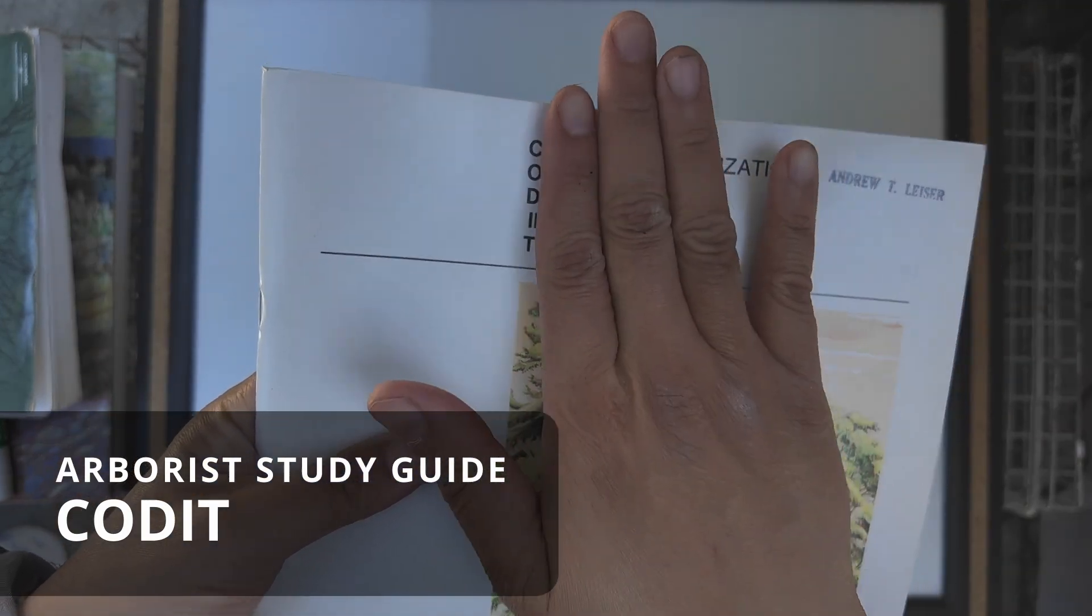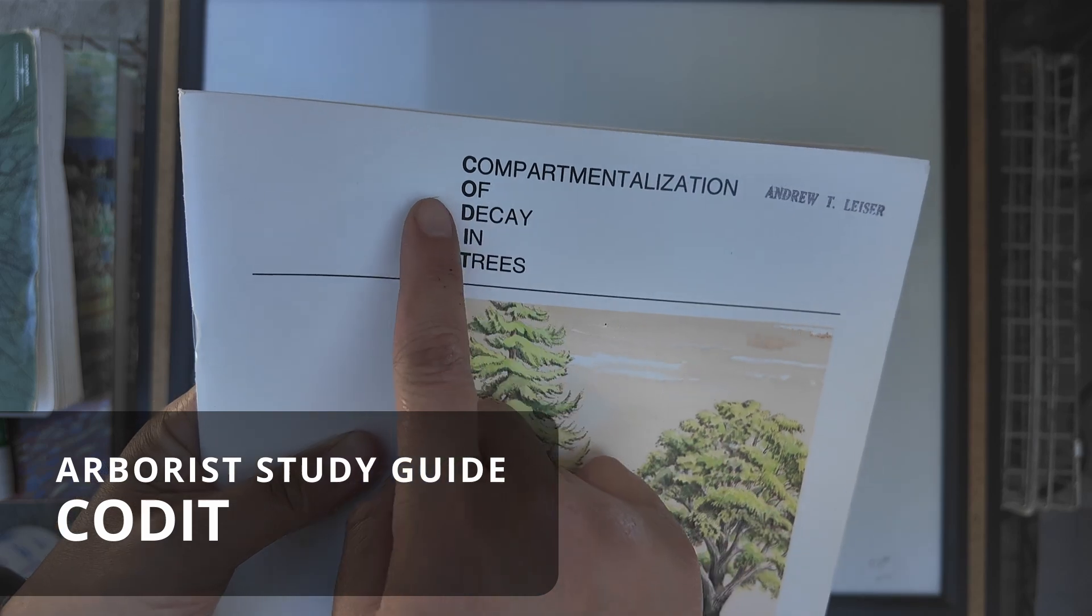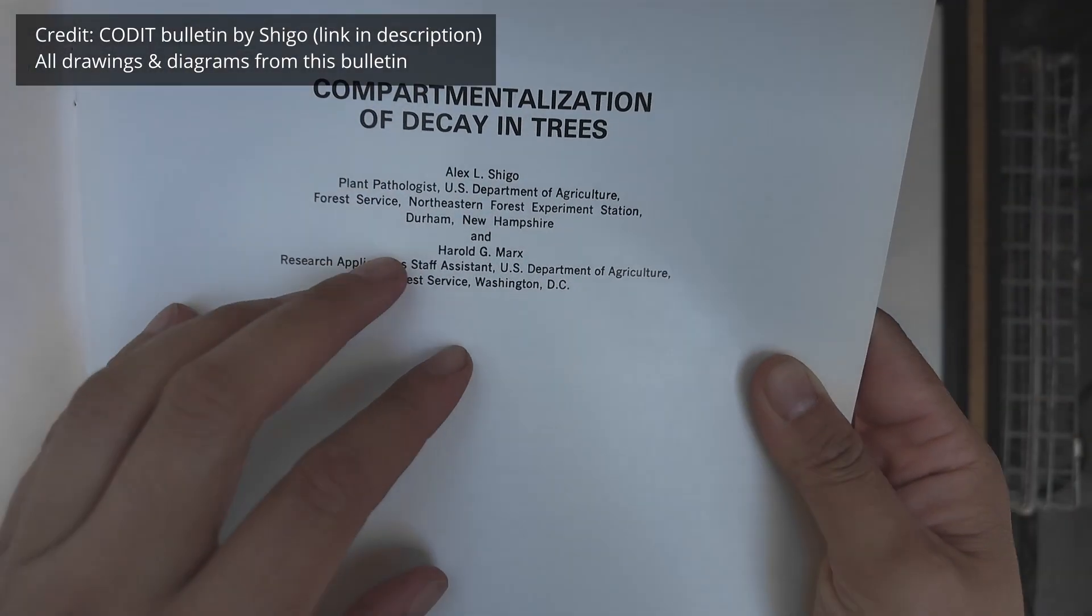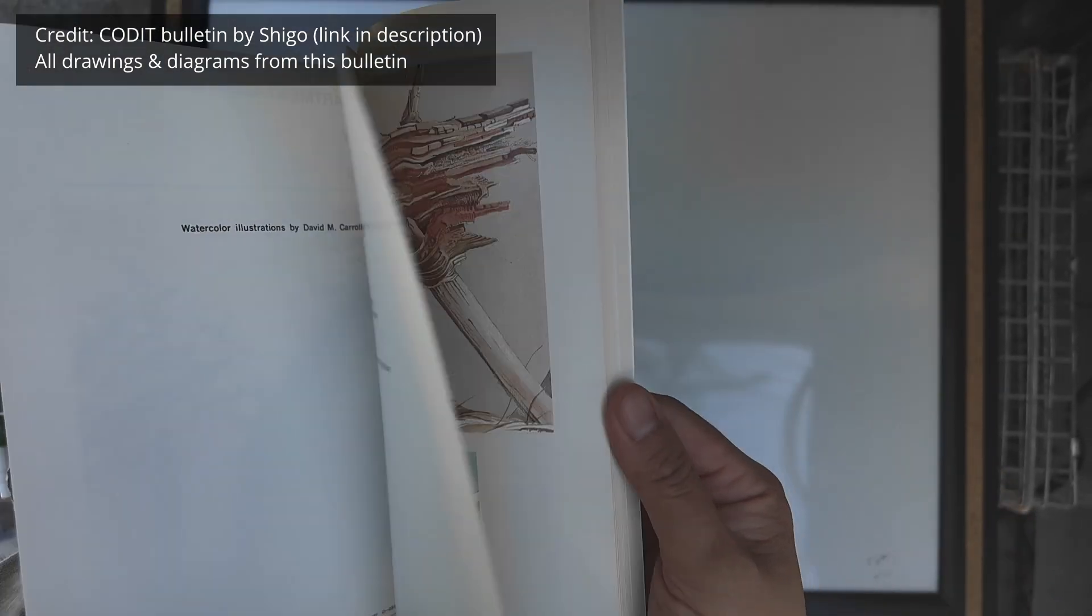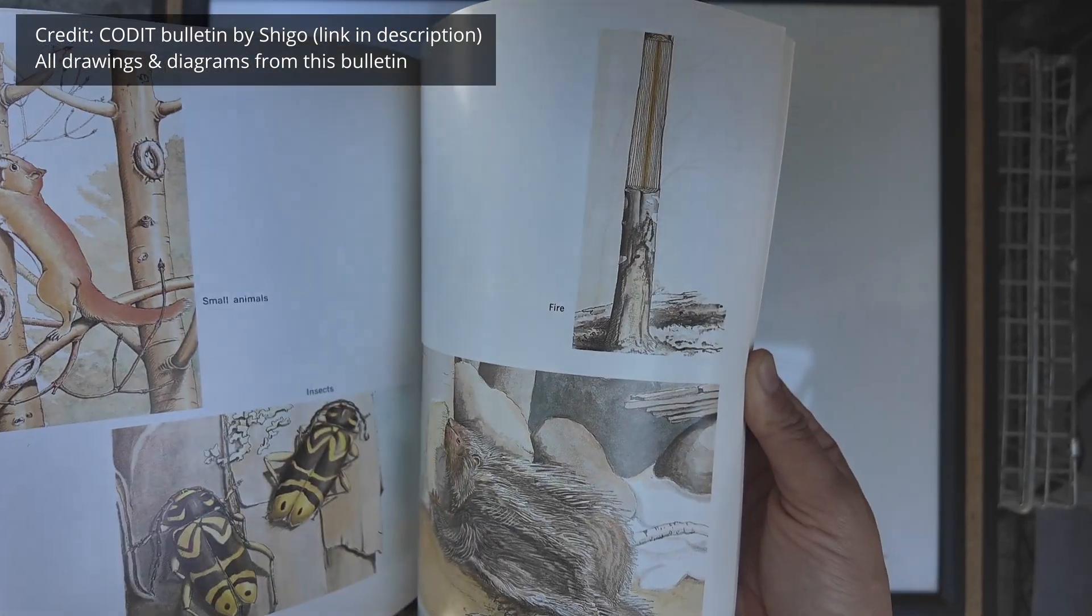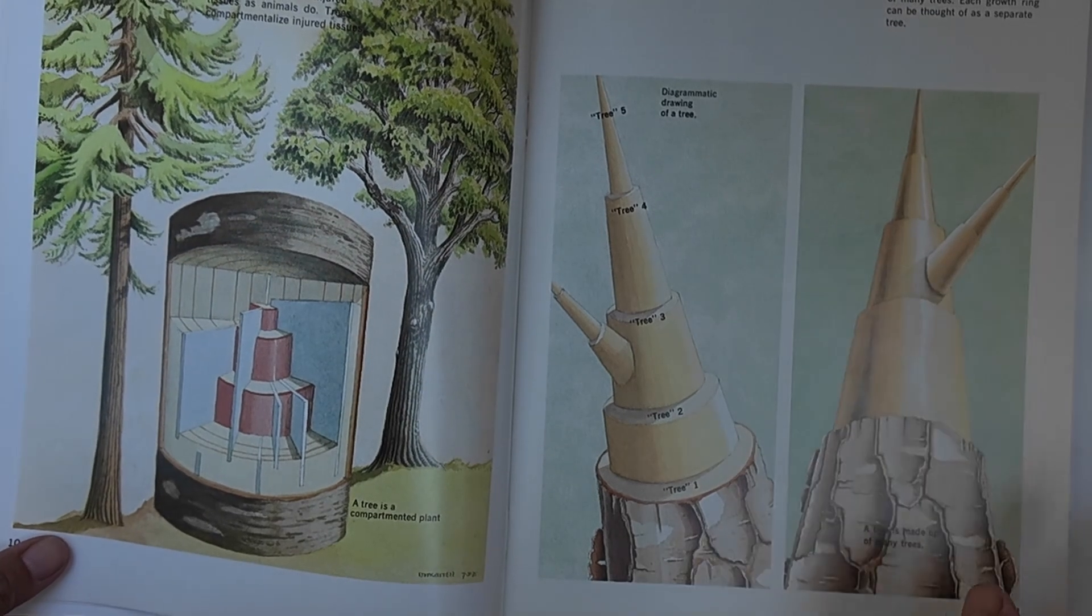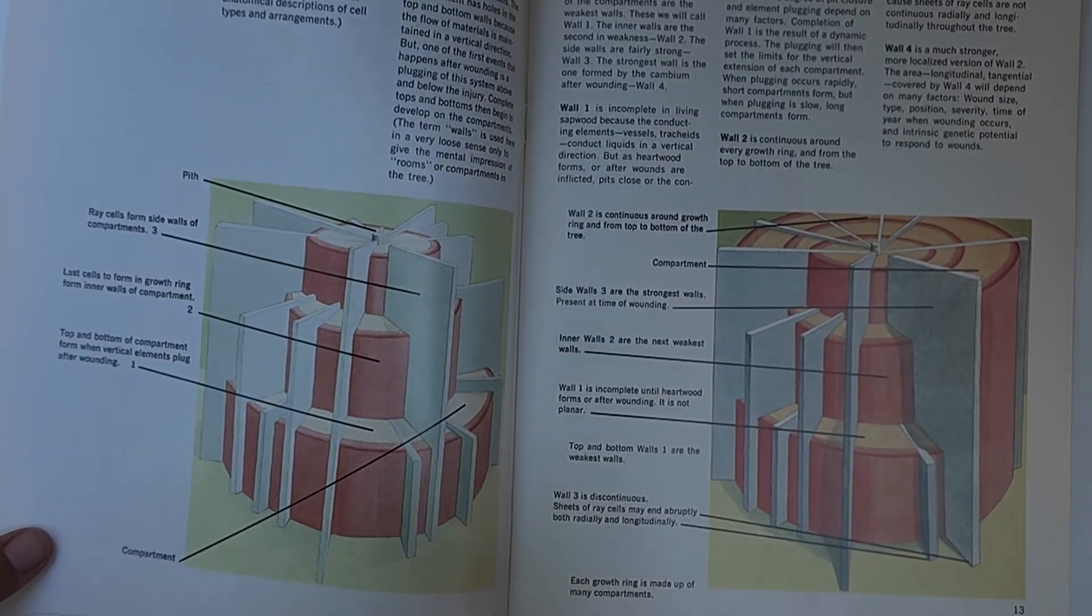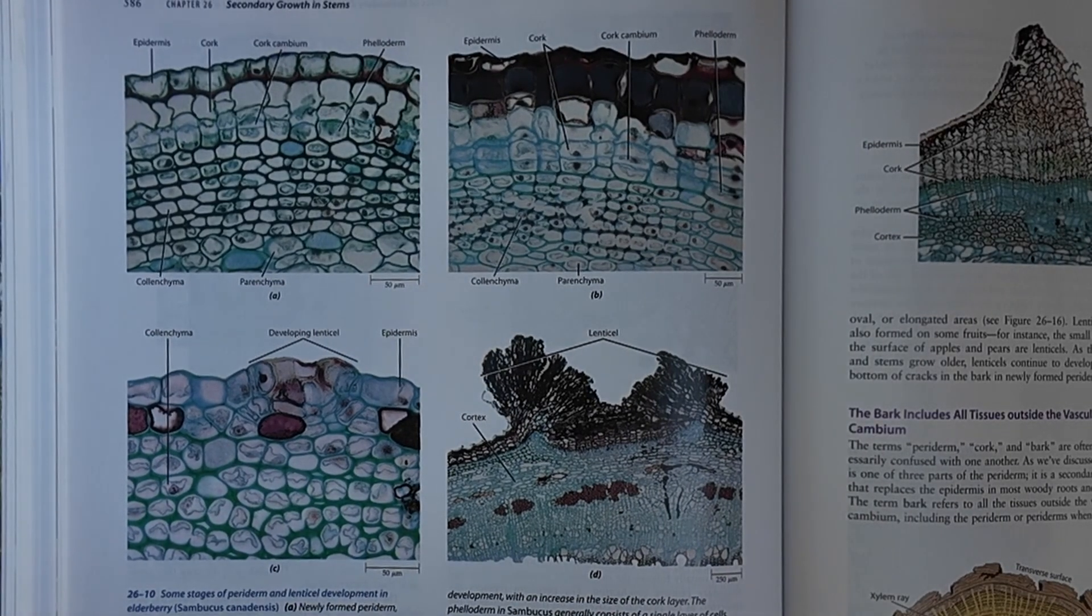This video is about CODIT, or compartmentalization of decay in trees. It's a model created by Alex Shigo, a plant pathologist with the US Forest Service, who dissected tens of thousands of trees. This model explains how decay or damage progresses in trees. The D can also stand for damage or dysfunction, but decay is how it started out. Let's review a couple of concepts very quickly first.